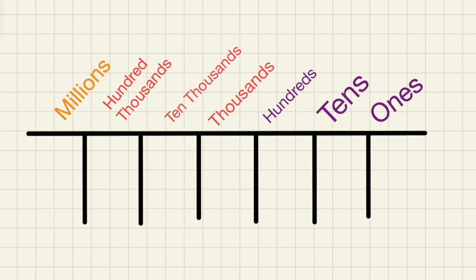Here's the place values chart and on the right side we have the ones place, and then the tens place, hundreds place, thousands place, ten thousands, hundred thousands, and finally millions.